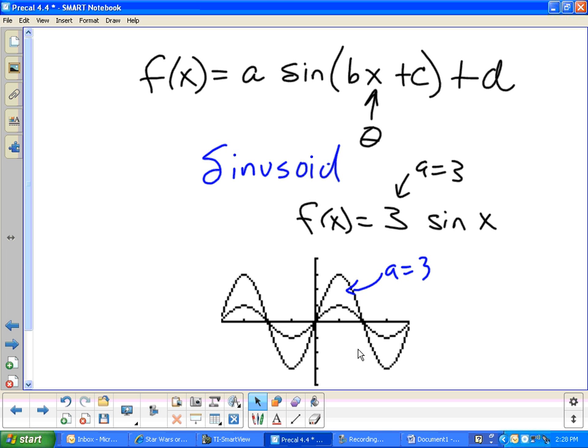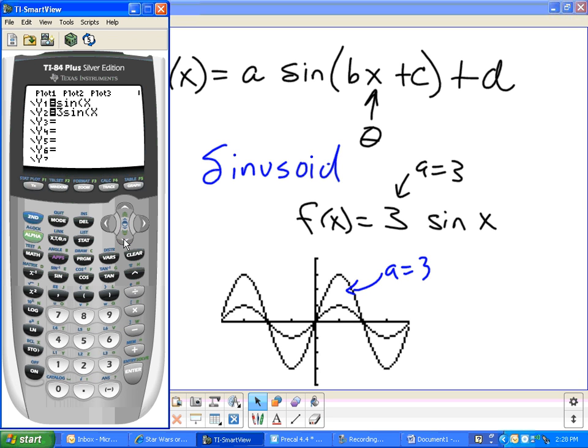So with this, we have A equals three, which means the amplitude is larger. Does making A less than one make it smaller? So let's just graph it and see. And your intuition is right, by the way. If we come in here and go amplitude, say, 0.3 sine x, and graph that, you get almost a flat line, barely going up, barely going down.